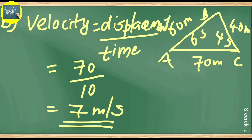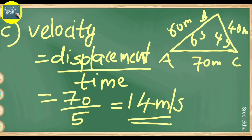For velocity, we use displacement divided by time. The straight-line distance from A to C is 70 meters. Total time is 6 seconds plus 4 seconds equals 10 seconds. Velocity equals 70 divided by 10 equals 7 meters per second. If time taken is 5 seconds, velocity equals 70 divided by 5 equals 14 meters per second.